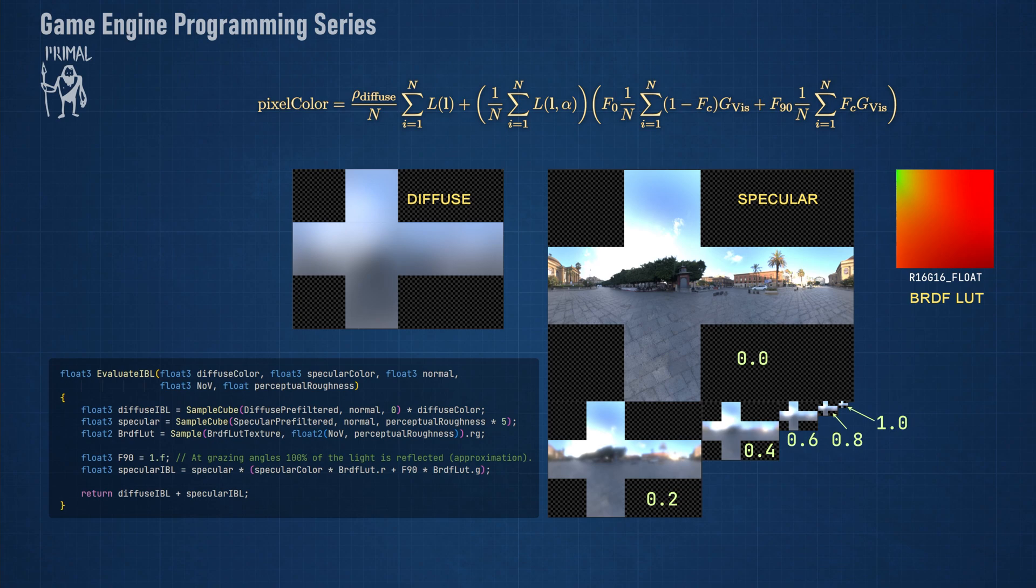However, we are not going to do the BRDF lookup texture part just yet. Since this is a default asset, we also have to set up the editor for generating default assets at startup. Therefore, I moved implementing this part to the next episode where we also finalize IBL implementation so we can move on to the next topic in the game engine programming series.